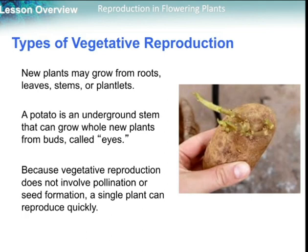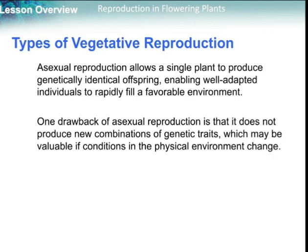The types of vegetative reproduction: new plants may grow from roots, leaves, stems, or plateaus. A potato, for example, is an underground stem that can grow a whole new plant from buds called eyes. Because vegetative reproduction doesn't involve pollination or seed formation, a single plant can reproduce quickly. Asexual reproduction allows a single plant to reproduce genetically identical offspring, enabling well-adapted individuals to rapidly fill a favorable environment. One drawback is that it doesn't produce new combinations of genetic traits, which may be valuable if environmental conditions change.